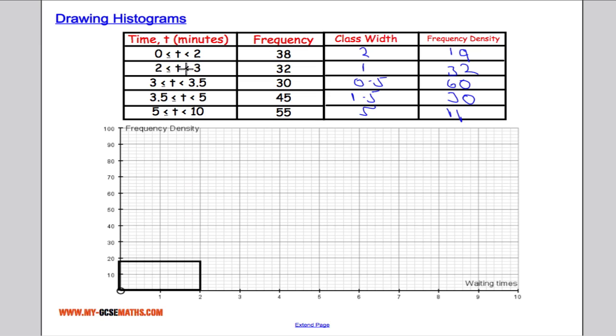Next one is between 2 and 3 and has a frequency density of 32, which is right here. Then between 3 and 3.5 is 60.